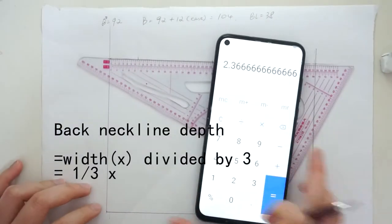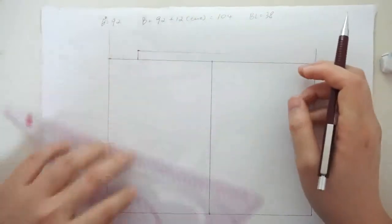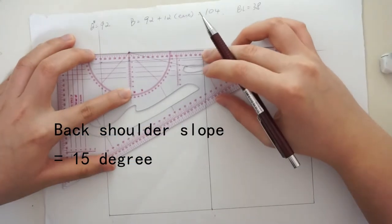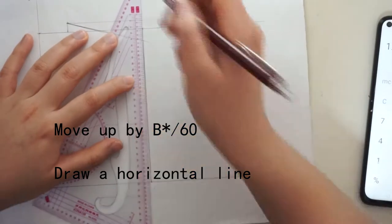Now do the depth, which is just 1 third of x. Now find the back shoulder seam, draw a horizontal line and draw a line 15 degrees clockwise. Lift the horizontal by B star over 60.